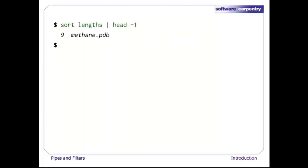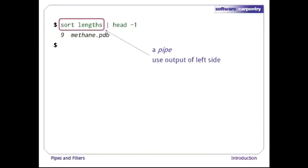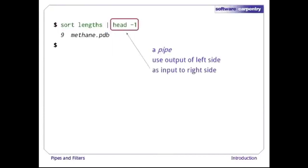Let's start by getting rid of the sorted_lengths file by running the sort and head commands together. That vertical bar between them is called a pipe. It tells the shell that we want to take the output of the command on the left and use it as the input to the command on the right without explicitly creating a temporary file.